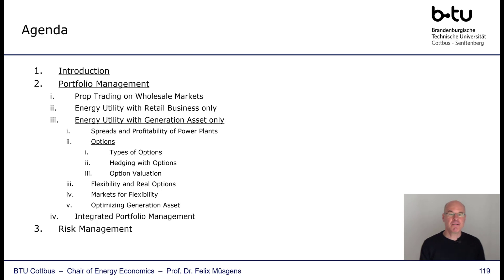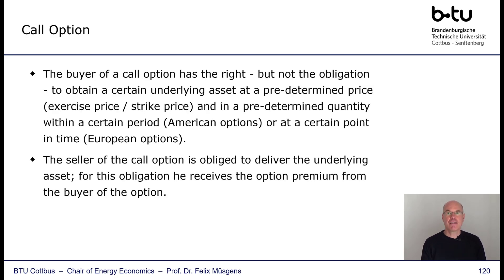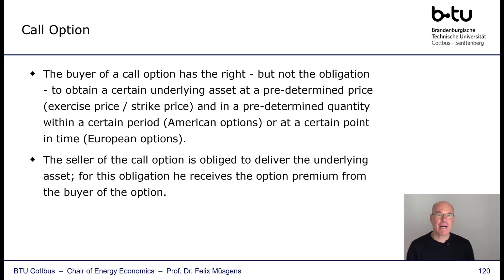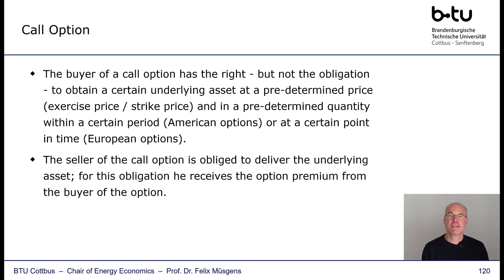We'll start by describing types of options, then go on with hedging with options, and then discuss option valuation. Let's introduce a typical plain vanilla call option first. The buyer of a call option has the right but not the obligation to obtain a certain underlying asset at a predetermined price — the exercise price or strike price — in a predetermined quantity within a certain period (American option) or at a certain point in time (European option).